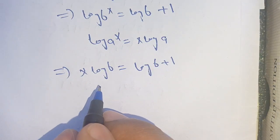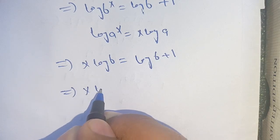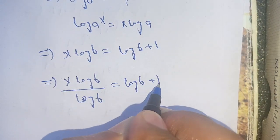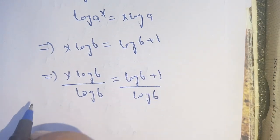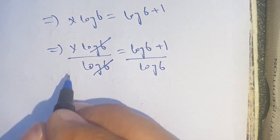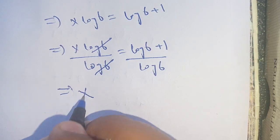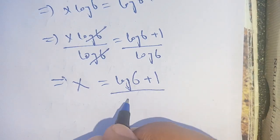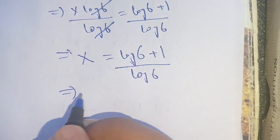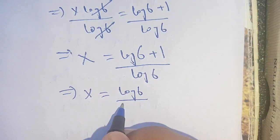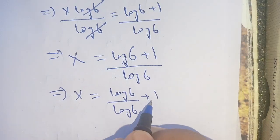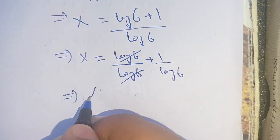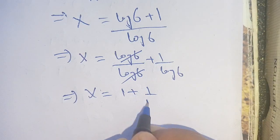Now, on dividing both sides by log of 6, we get x equals log of 6 plus 1 divided by log of 6. We can split this as log of 6 divided by log of 6 plus 1 divided by log of 6. Cancelling log of 6 gives the final answer: x is equal to 1 plus 1 divided by log of 6.